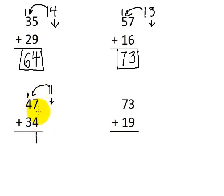And then our tens unit is a 1 as well, so we move that over here. Then we have 4 plus 3 is 7, plus 1 is 8. So 47 plus 34 is 81.